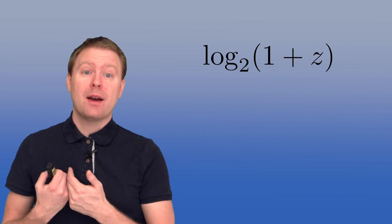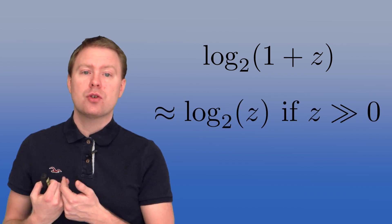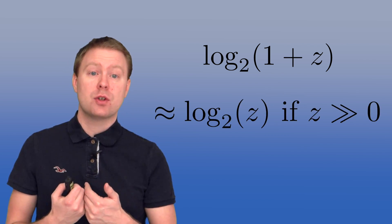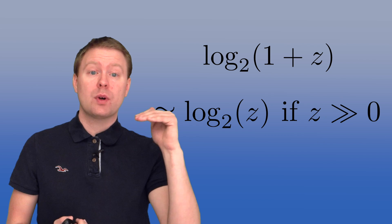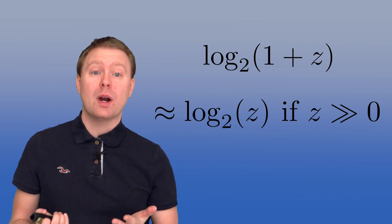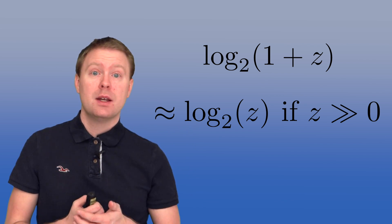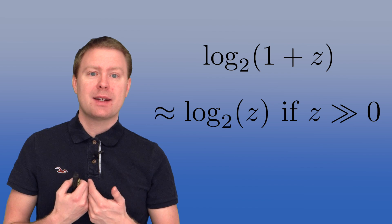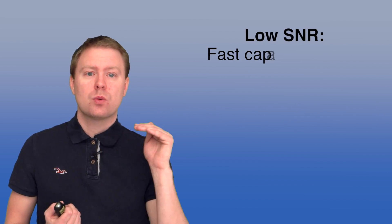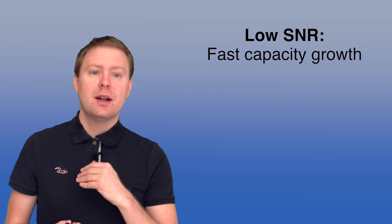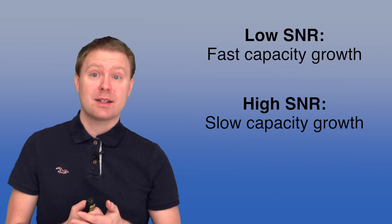However, instead when we have a large value of Z, log2 of 1 plus Z will behave as log2 of Z, so it will grow in a logarithmic way, which is a slow way of growing. Therefore we can expect a fast growth when we have a small SNR and a slow growth when we have a high SNR.